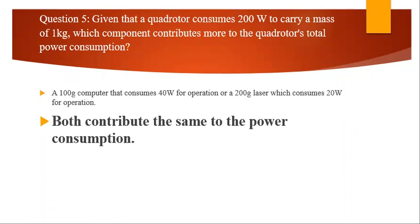And the fifth question is, given the quadrotor consumes 200 watts of power to carry mass of 1 kg, which components contribute more to the quadrotor total power consumption? Let's suppose we have a hundred gram computer to consume 40 watts for operation, or 200 laser which consume 20 watts for the operation. So basically both contribute the same power for the consumption. These are the correct answers.